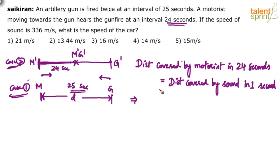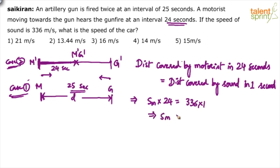Distance equals speed × time. So speed of the motorist × 24 = speed of sound × 1 = 336 × 1. Therefore the speed of the motorist is 336 ÷ 24 = 14 meters per second. So option 4 is the answer.